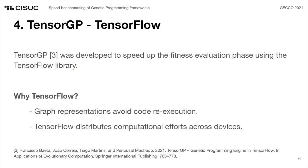One of the lesser-known frameworks considered in our study is TensorGP. We initially developed TensorGP with the aim of providing a robust system for seamlessly integrating domain vectorization in genetic programming. To achieve this, we took advantage of the TensorFlow library as it allowed for a straightforward implementation of the aforementioned speedup techniques. Besides supporting data vectorization, TensorFlow also provides several graph abstractions that can be applied to the caching of intermediate results in genetic programming.